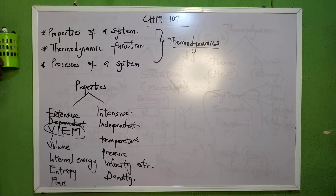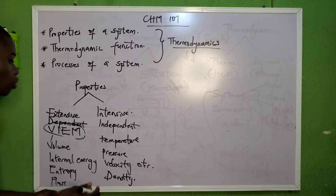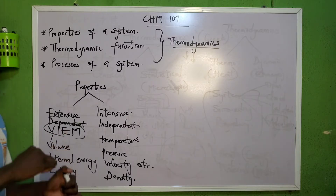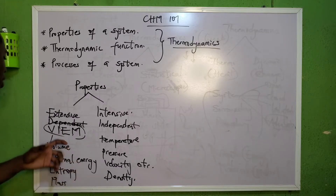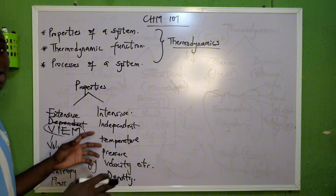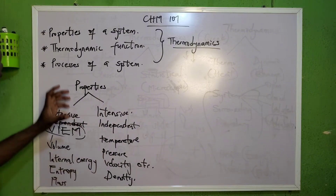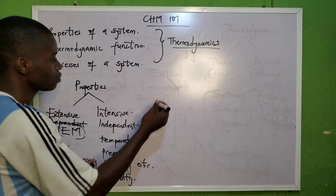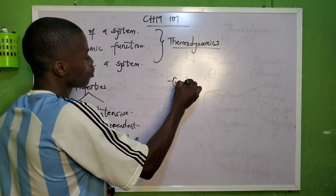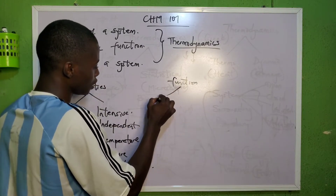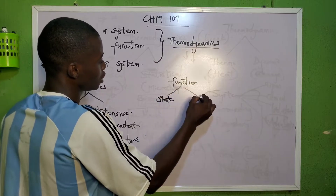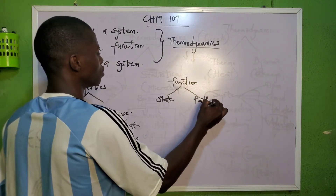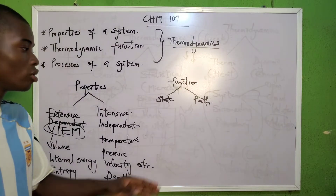Please take note of the properties of a system. A question may also come in this format: 'Which of the following properties of a system is dependent on the magnitude?' The one that is dependent is extensive, while the one that is independent is intensive. Now let's continue with the next topic — thermodynamic functions. There are two types: the state function and the path function.